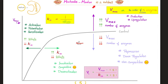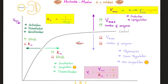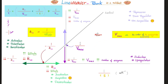Let's put everything on the Michaelis-Menten plot. Competitive inhibitors decrease affinity, so Km goes up — shifting the curve to the right — but Vmax does not change. Non-competitive inhibitors decrease the number of enzymes available, so Vmax drops. Next, let's look at the Lineweaver-Burk plot.